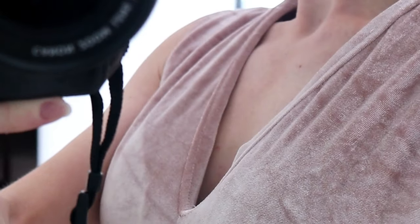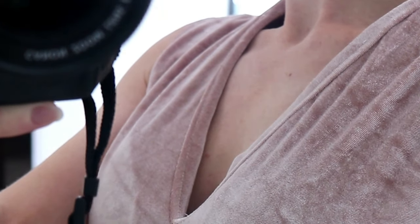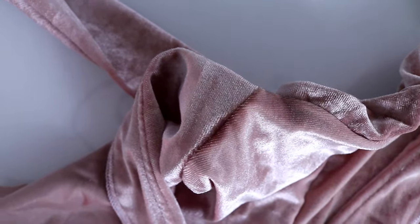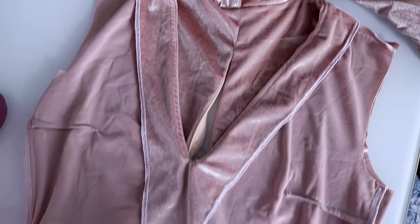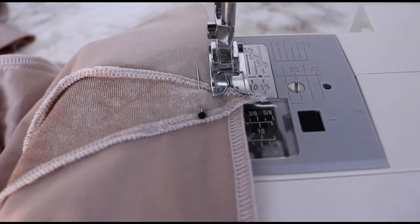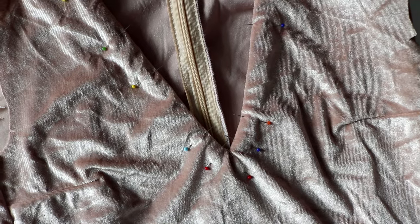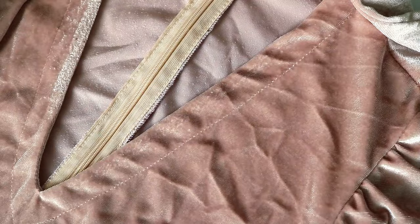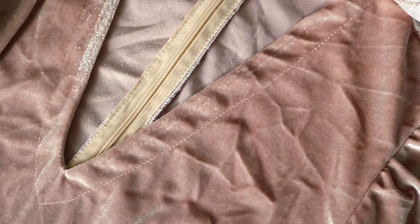As you can see understitching is not enough to hold the facing inside the dress. Sometimes stitching the shoulders helps but we are going to stitch the facing bottom part into the dress seam allowance like this and then pin and baste the neckline and topstitch. This gives us a neat and professional finish.